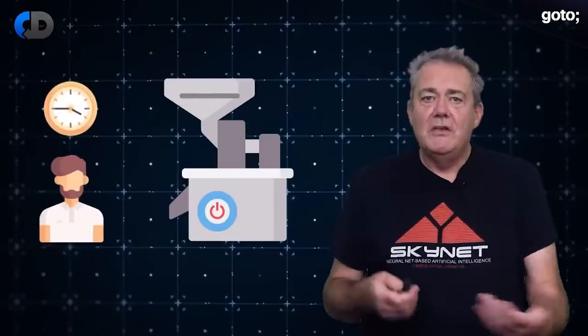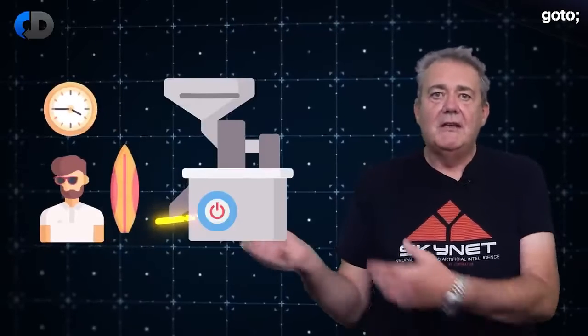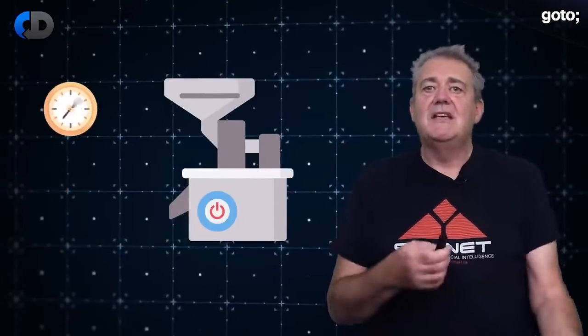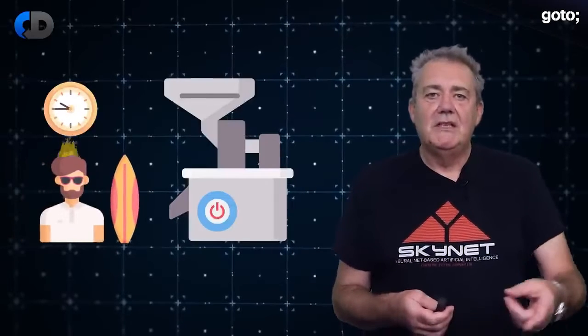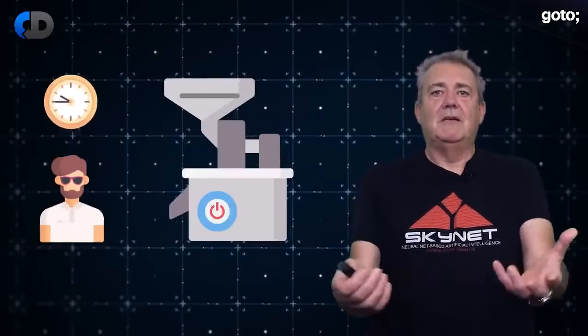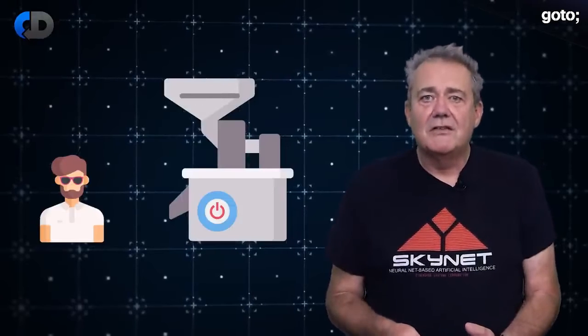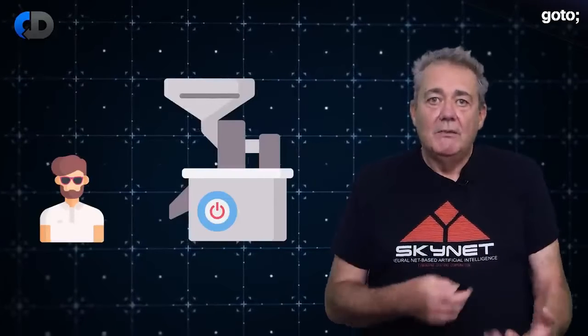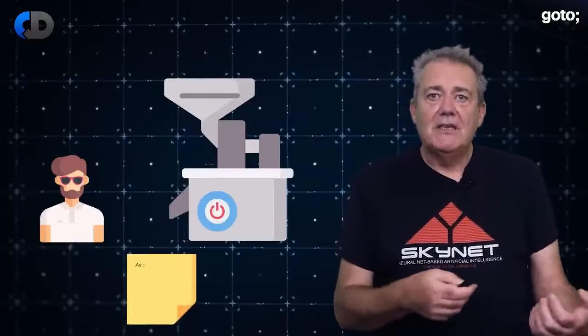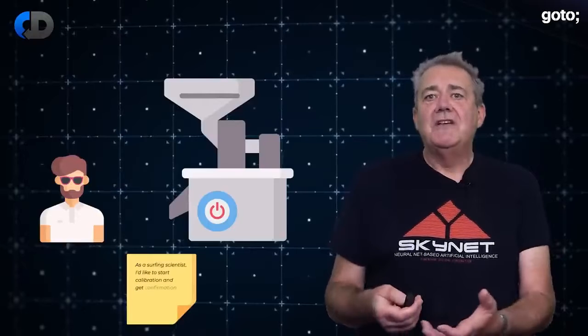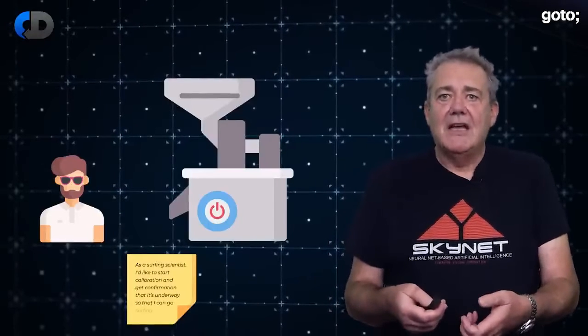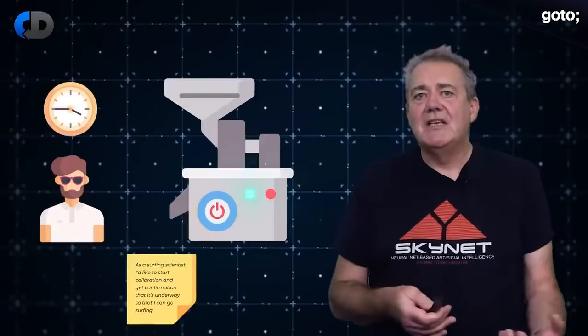Let's imagine that you are the user. You walk up to the machine, press the button and then head off to go surfing while the machine starts up. Six hours later, you return and the machine isn't running. You didn't press the button properly. That would be a terrible design. Given the way that the machine works necessitates this long startup, as a user, I'd at least like some feedback that the calibration sequence had started properly when I pressed the button and before I got my surfboard out. So now we have a user need that we can use to inform our design. As a surfing scientist, I'd like to be able to start calibration and get confirmation that calibration is underway so that I can go surfing.